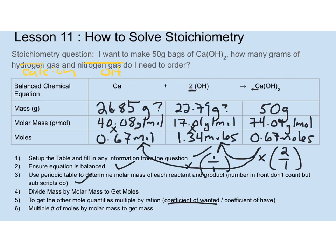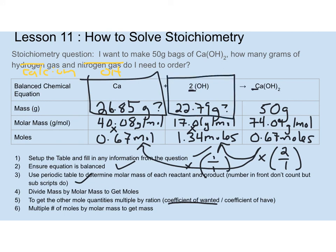It's always good to check that the answers add up to around 50 grams. It won't be perfect because of rounding, but it does. So my final answer is: I would need 26.85 grams of calcium and 22.79 grams of hydroxide to make 50 grams of calcium hydroxide. Just make sure you spend some time going through the lecture, don't rush, and email me if you have any questions.